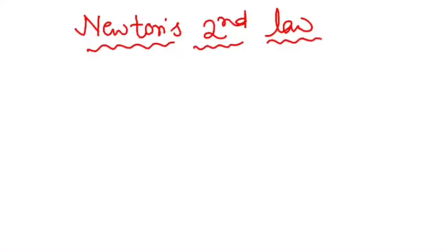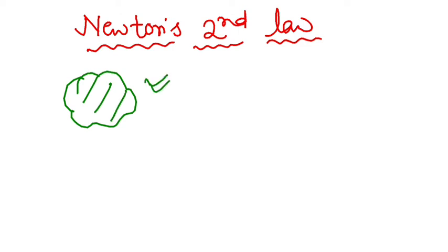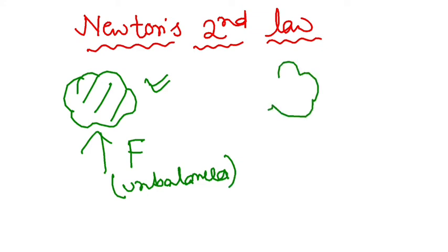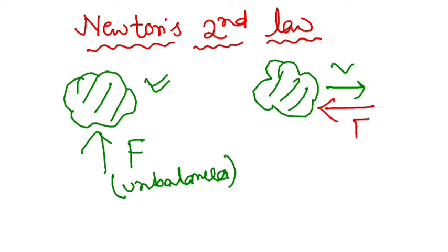Now let's revisit Newton's Second Law. The second law says: if an object is at rest, according to the first law it wants to stay at rest. However, we can change its state of rest by applying an unbalanced force. Similarly, if an object is moving with a certain velocity, I can stop it by applying an unbalanced force. So Newton's Second Law says: by applying a force, we can change the state of rest or state of motion.